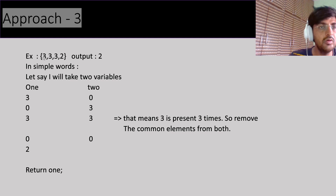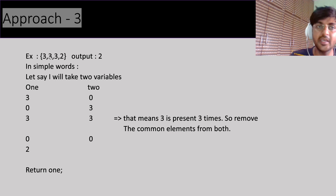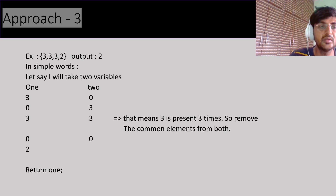Let's walk through example [3, 3, 3, 2]. First element is 3 — encountered for the first time, frequency is one, so we store it in 'one'. Now 'one' has 3 and 'two' has 0. Moving to the second element: we see 3 again — it's appearing a second time, so it should move to 'two'. Once moved, we remove it from 'one'.